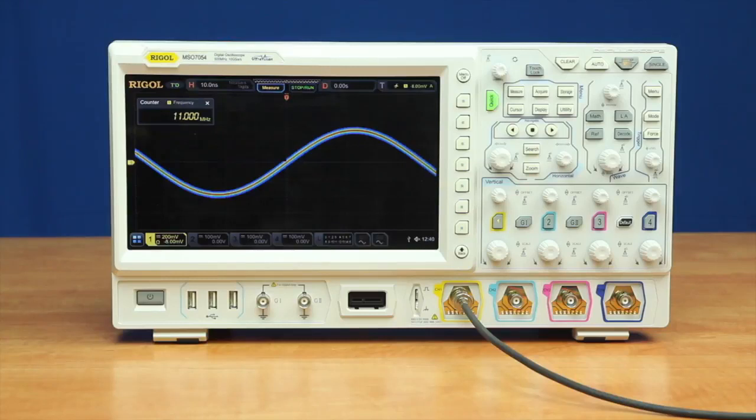Another important improvement made possible by the custom chipset is improved frequency accuracy. Let's take a look at how the frequency accuracy makes signal analysis easier using this 11 megahertz signal.